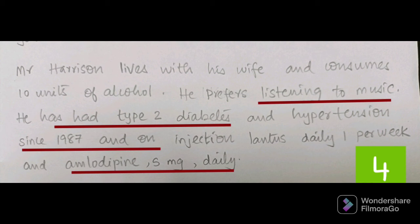Then for the social paragraph: 'Mr. Harrison lives with his wife and consumes 10 units of alcohol.' This is personal history. 'He prefers listening to music.' Regarding medical history: 'He has had type 2 diabetes and hypertension since 1987 and is on injection Lantus' - keep a comma between medications. This is the social paragraph.